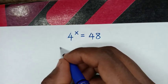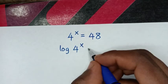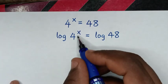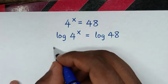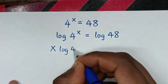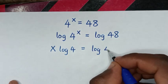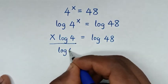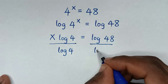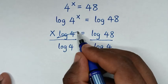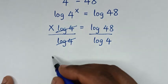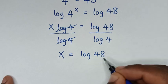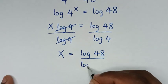So it will be log of 4 power x is equal to log of 48. Then, this power x will move to the base, so it will be x times log of 4 is equal to log of 48. Then, we'll divide by log of 4 in both sides, so log of 4 cancels log of 4, and it will be x is equal to log of 48 over log of 4.